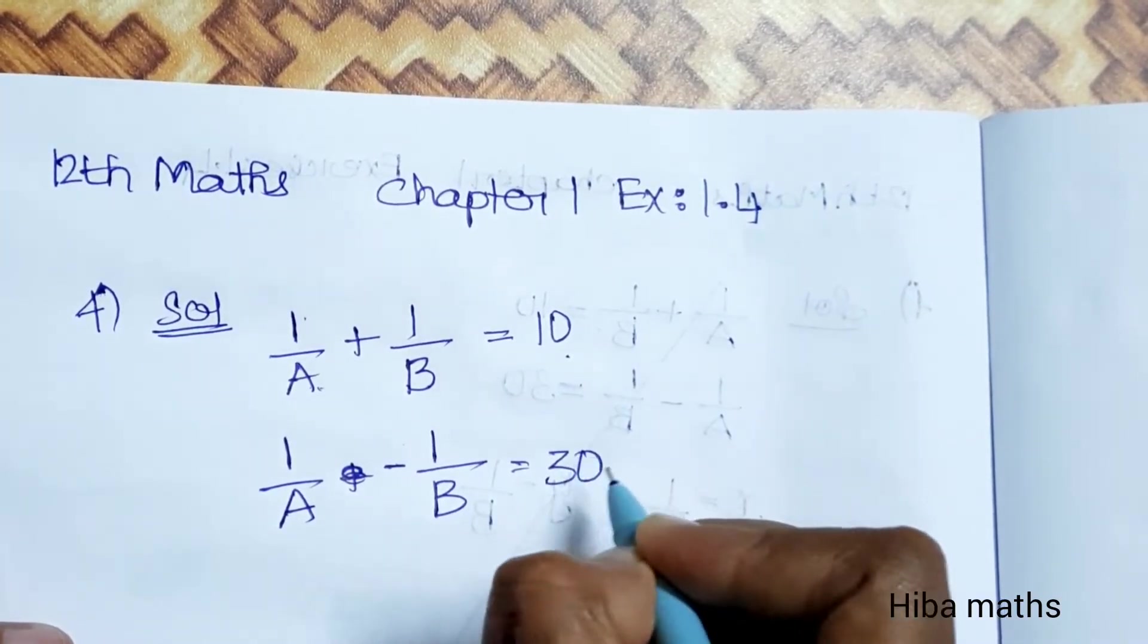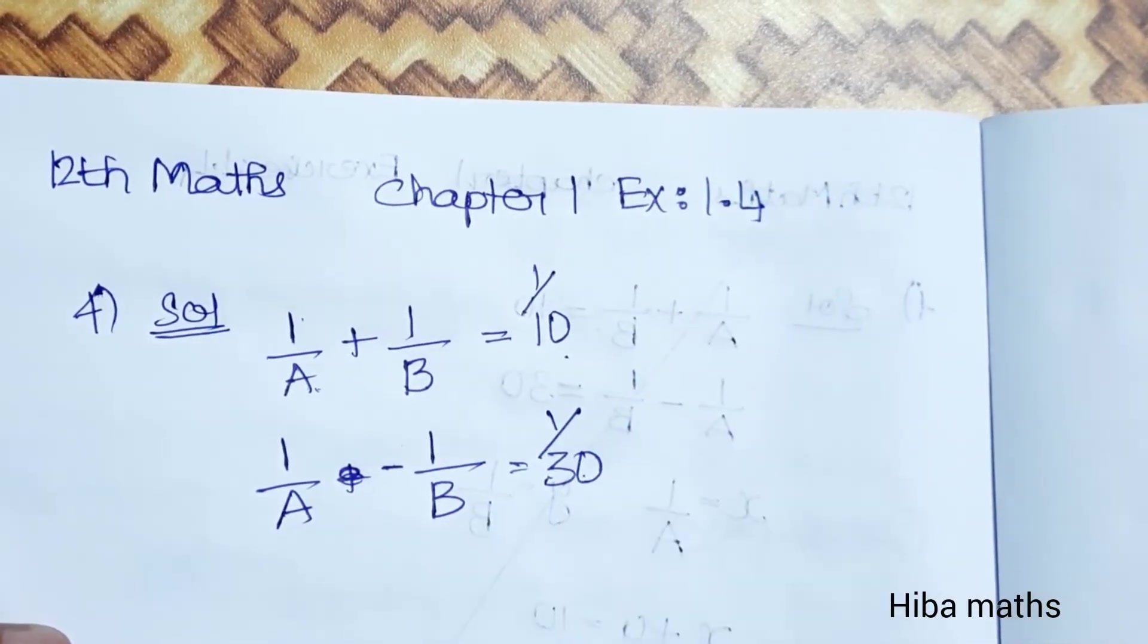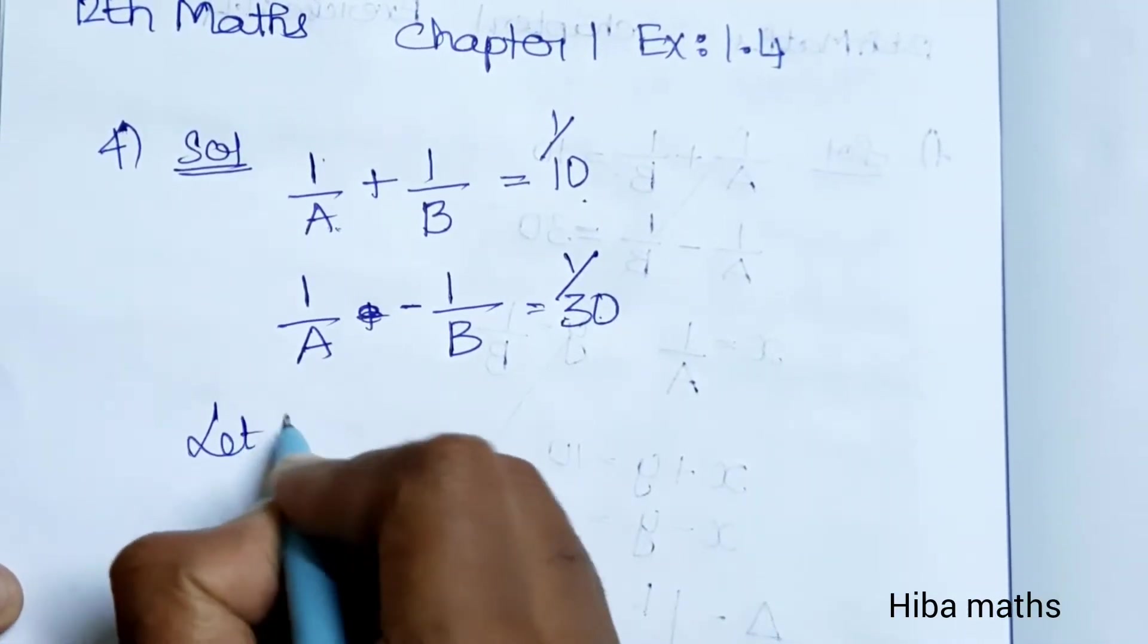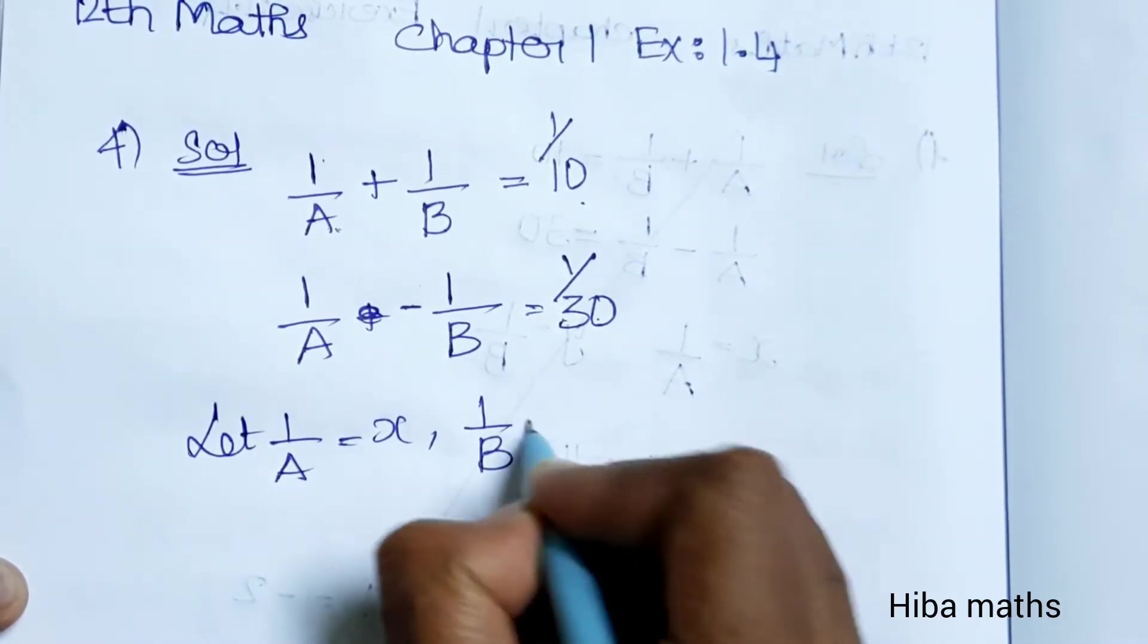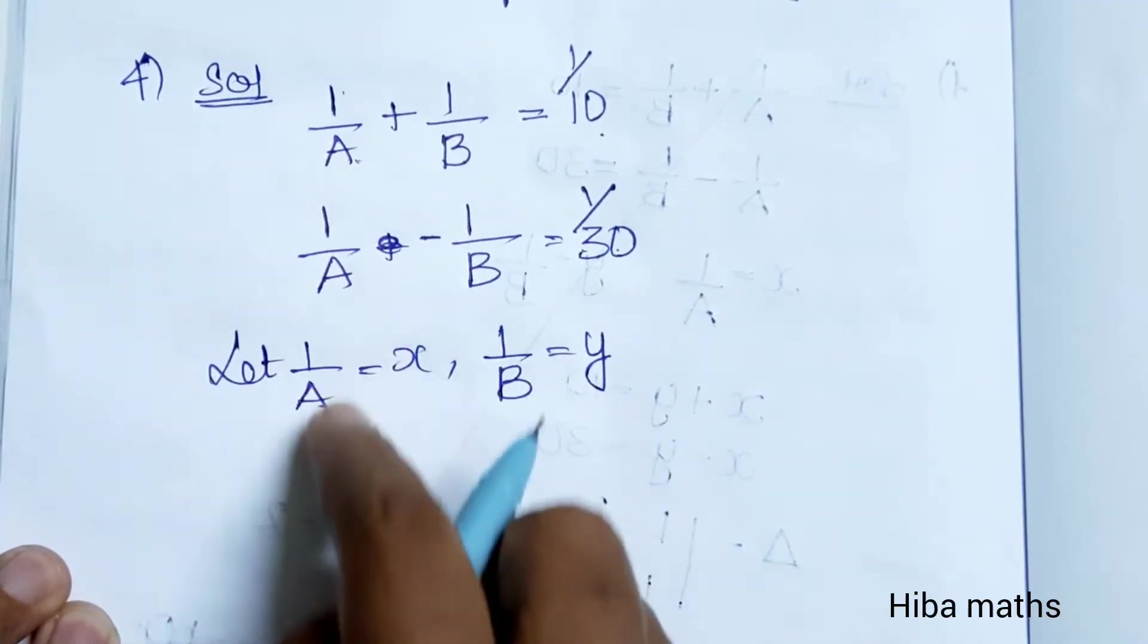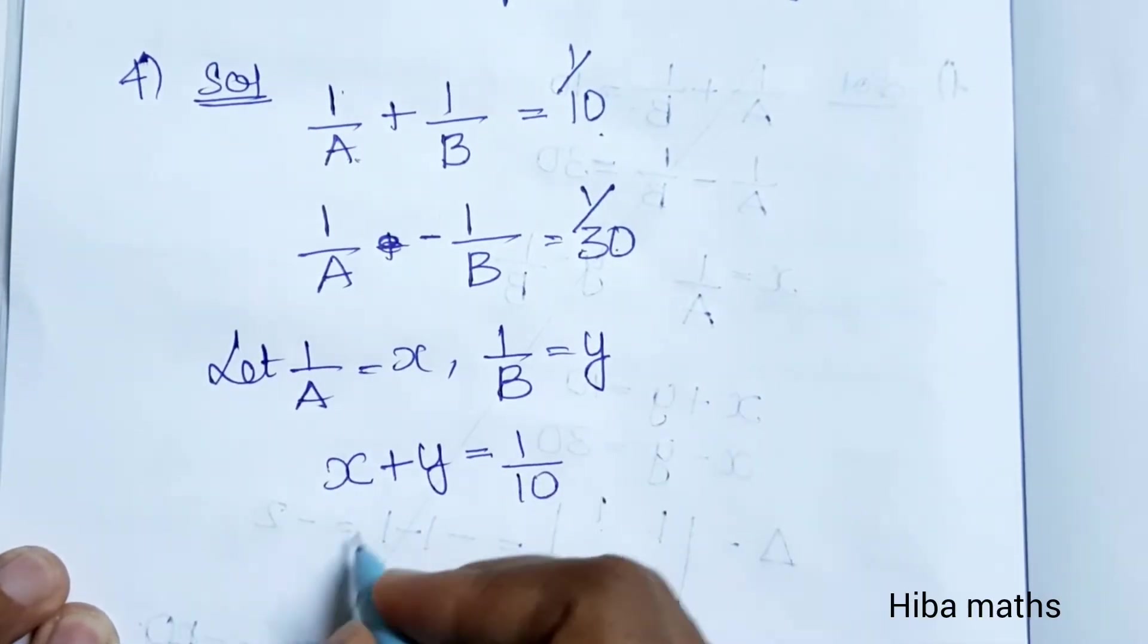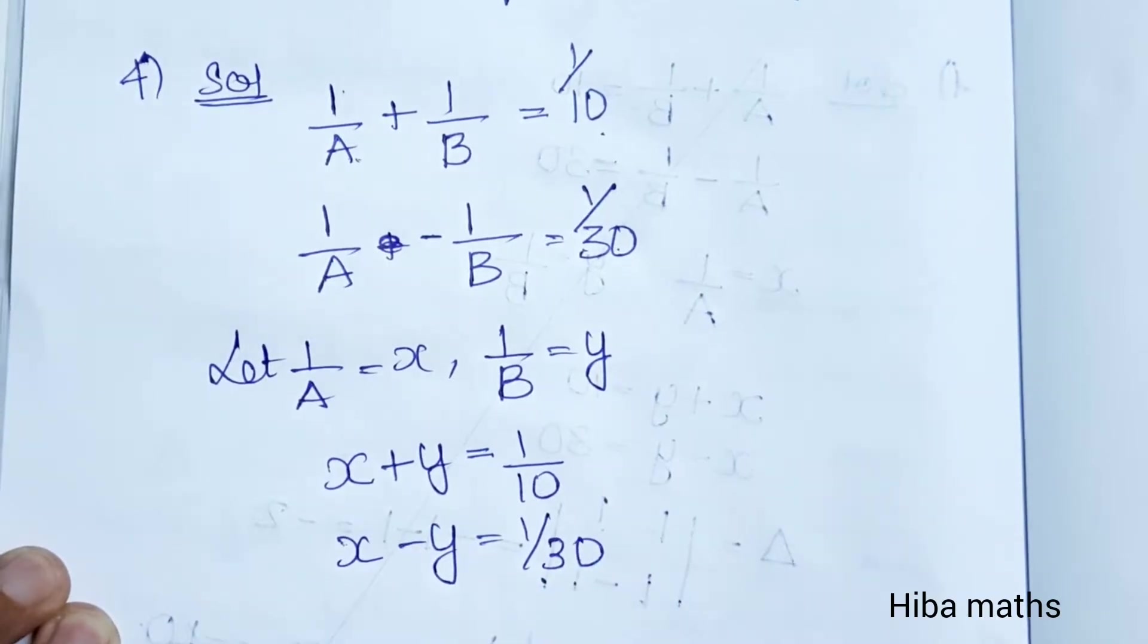Now we are going to use 1 by A and 1 by B. Let's change the data: 1 by A plus 1 by B, change the same way. 1 by A, let x equal 1/A and y equal 1/B. So we get: 1/A plus 1/B equals 1/10, which becomes x plus y equals 1/10.